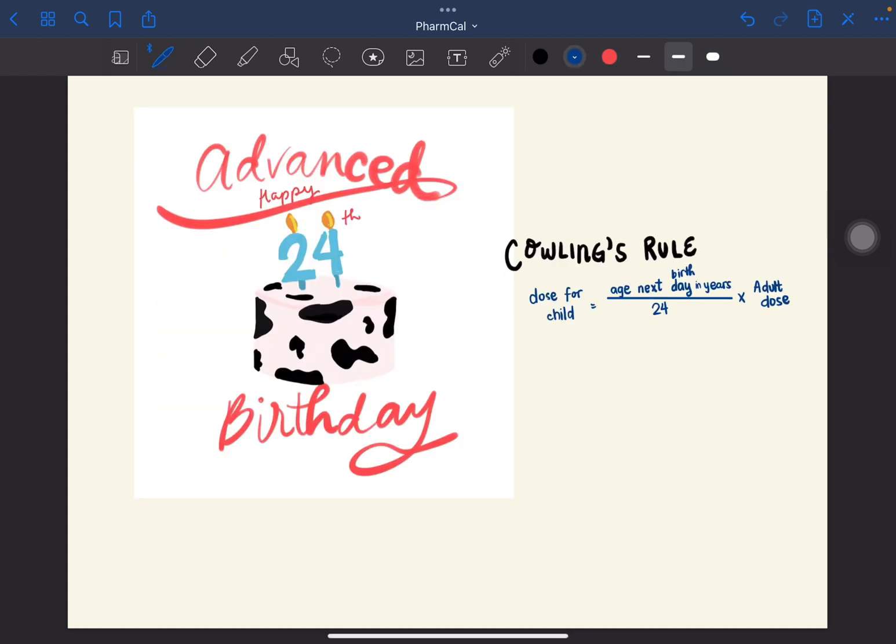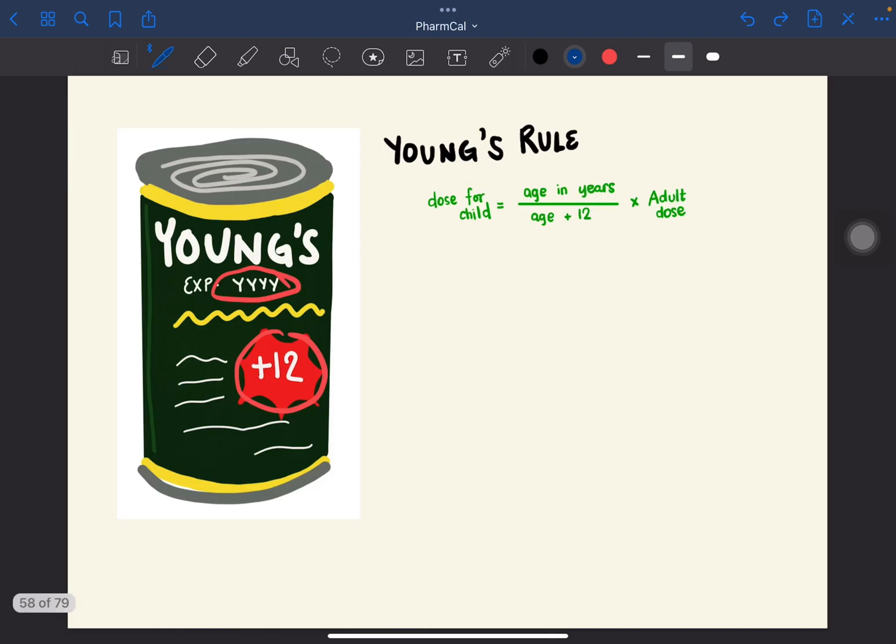For Cowling's rule, the dose for the child will be calculated using the age next birthday in years over 24 times the adult dose. In the visual mnemonic here, there's advanced happy birthday because this refers to the age next birthday in years. As you can see, the cake is cow themed to signify that this is Cowling's rule, and it's their 24th birthday for 24. There's a line here to indicate that you divide by 24.